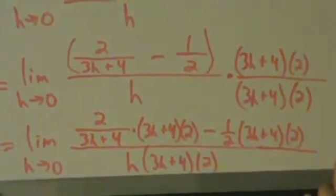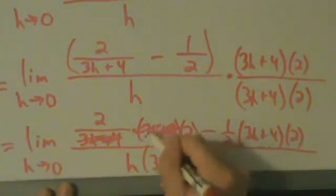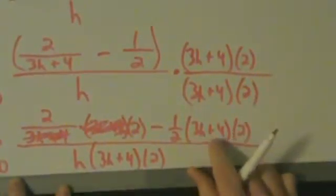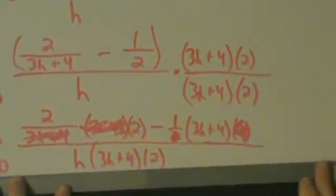So what's happening now? 2/(3h+4) times (3h+4) times 2. So (3h+4)s are going to cancel. That's fabulous. 1/2 times stuff times 2. So this 2 and this 2 are going to cancel. Alright.